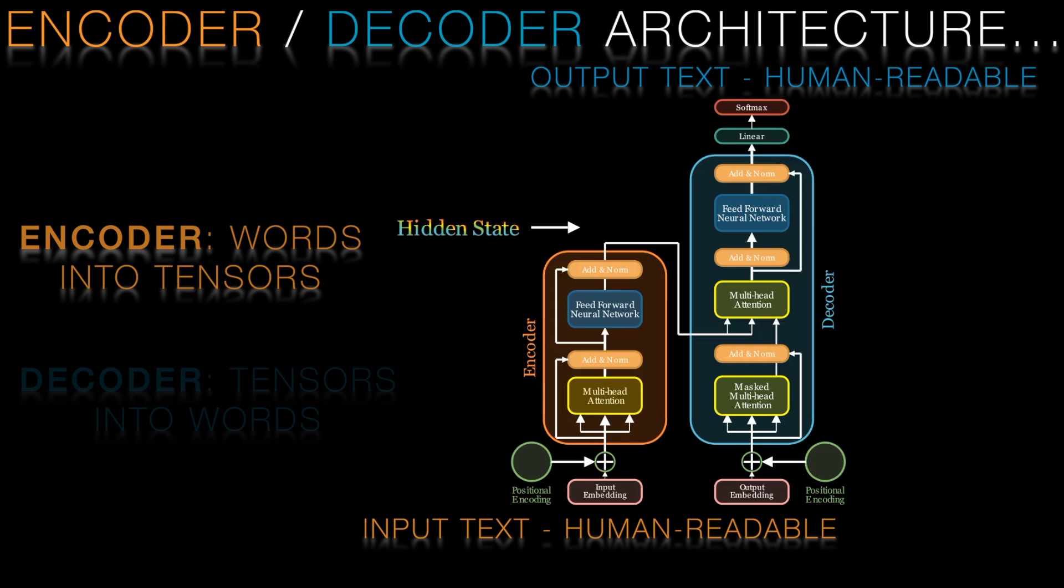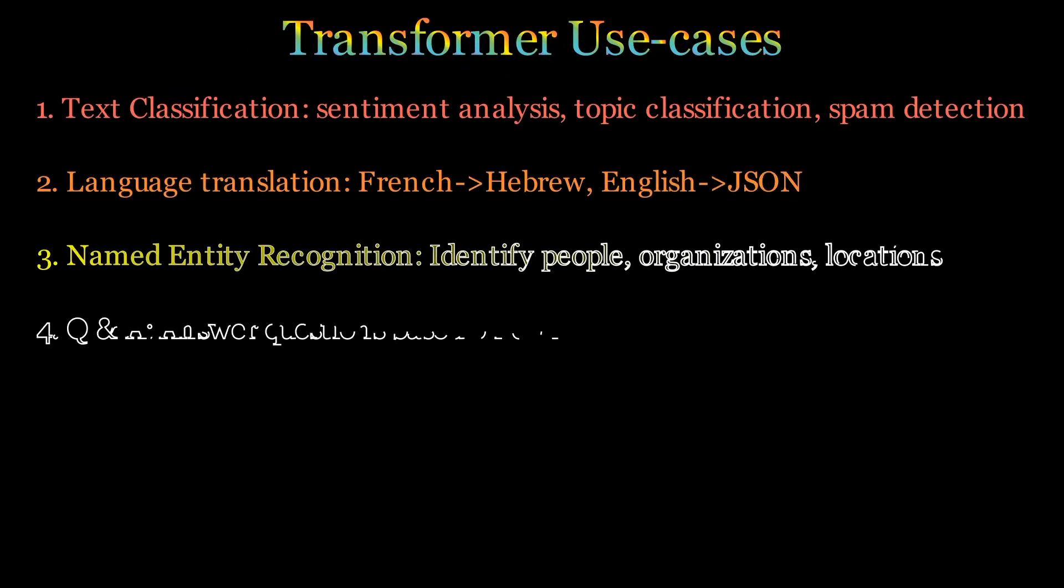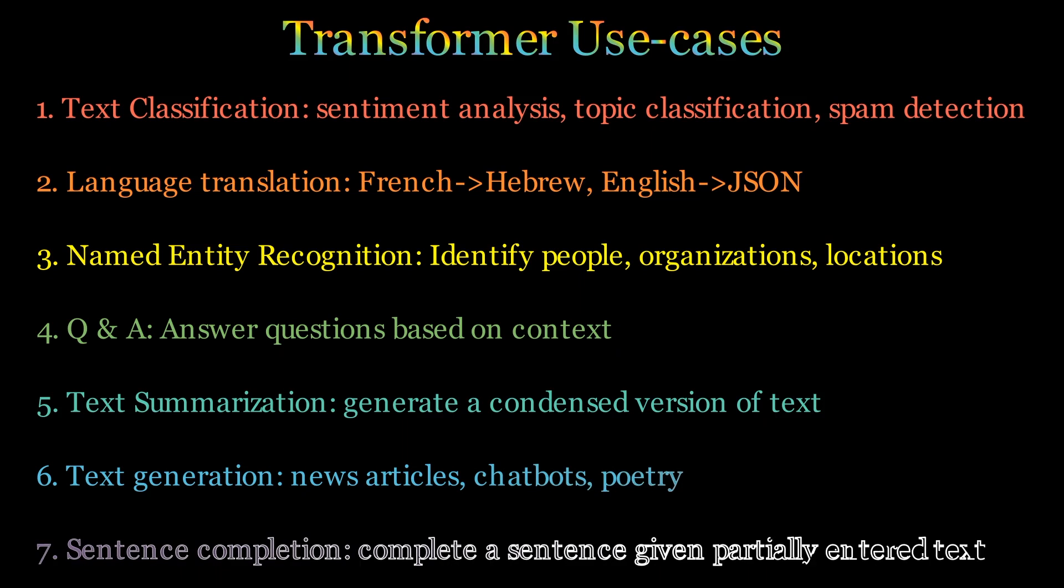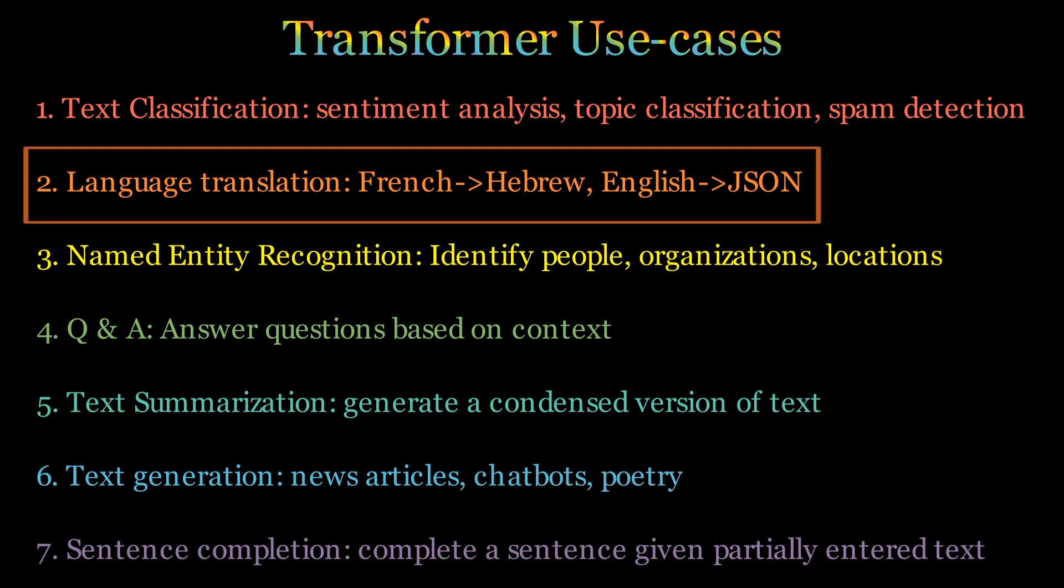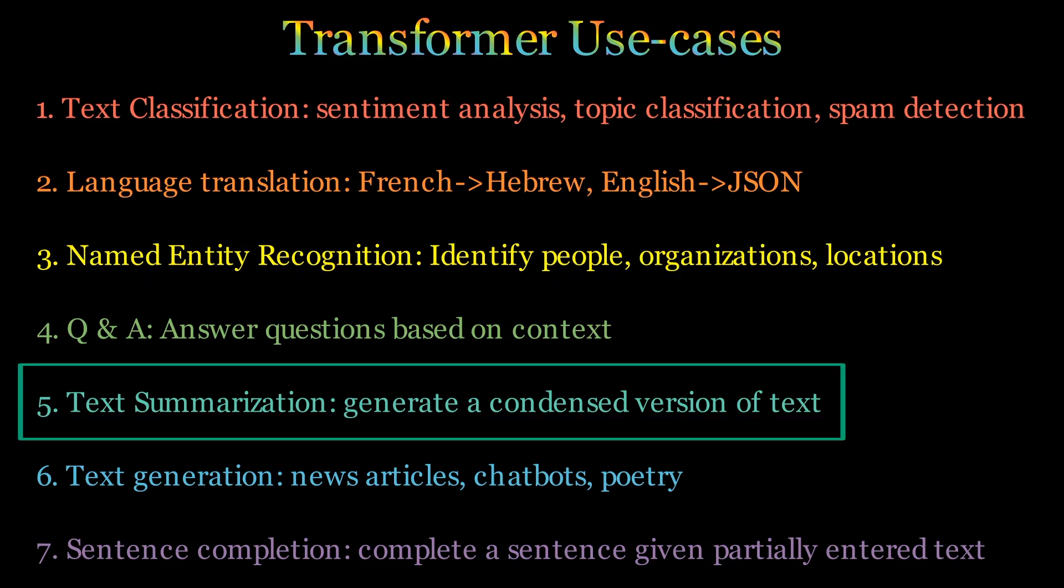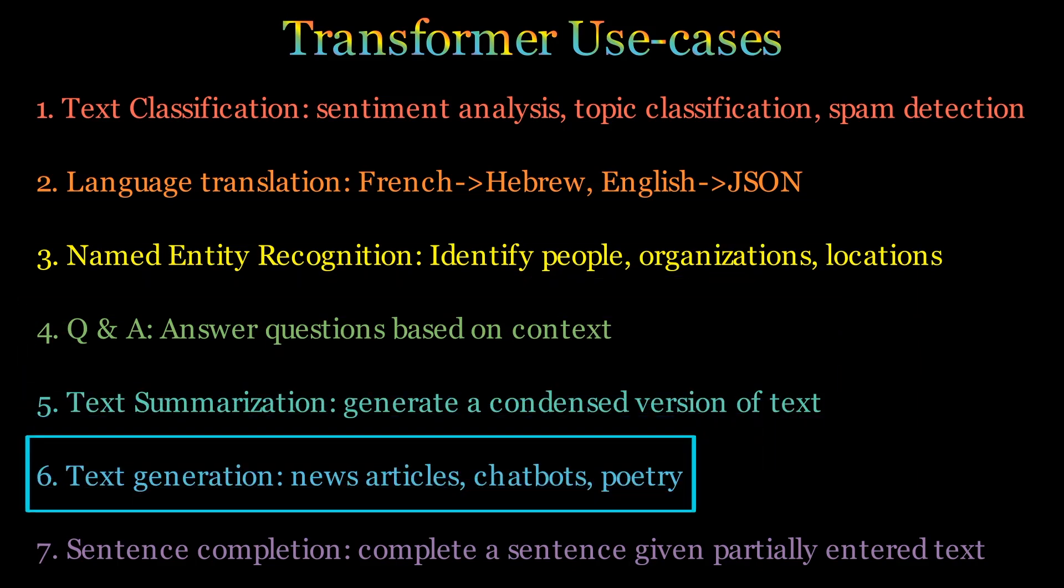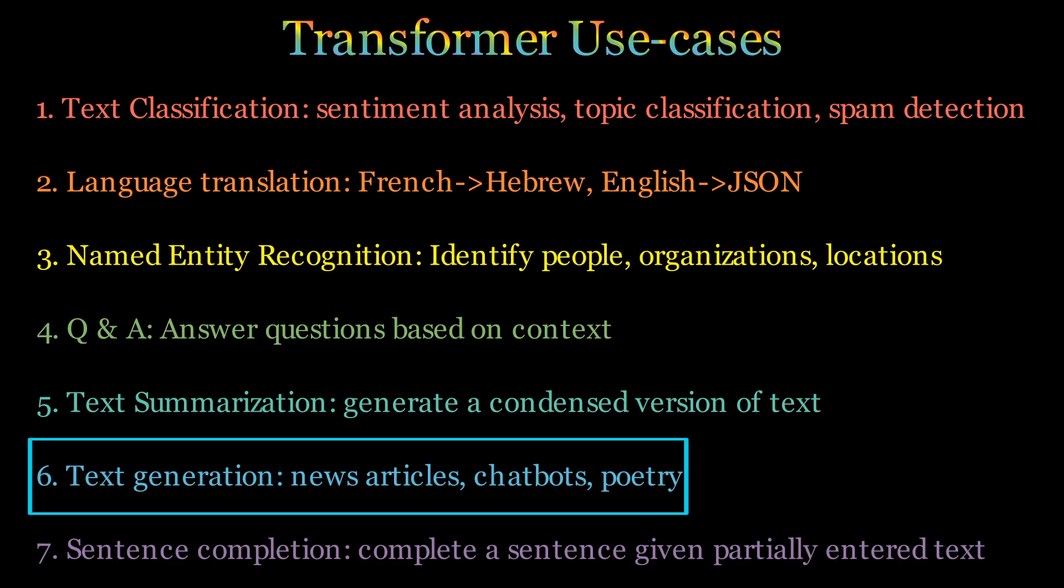Likewise the decoder does the reverse. It's responsible for translating the machine readable hidden state into a human readable sequence. As the name suggests, the transformer model will transform the sequence somehow. The output sequence might be a translation of the input sequence, a summary, or it might be the generation of an entire article from a simple headline or first sentence.